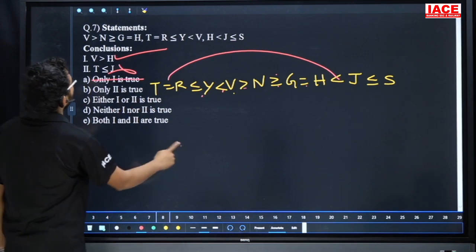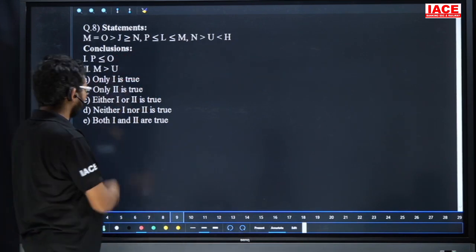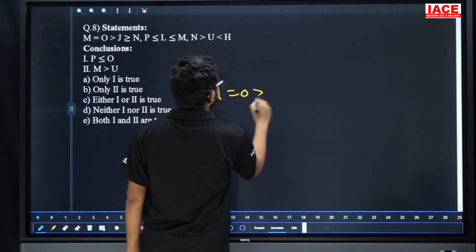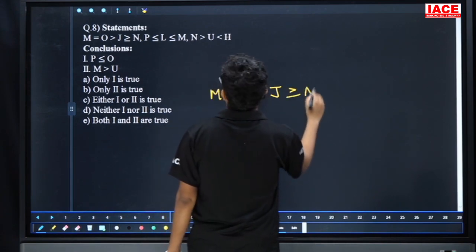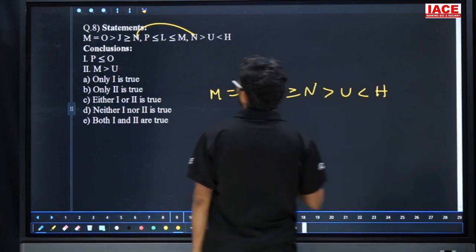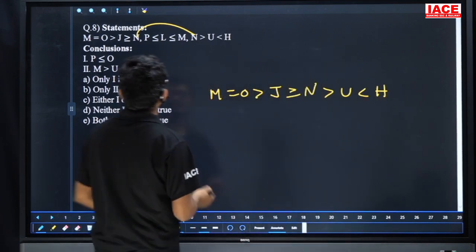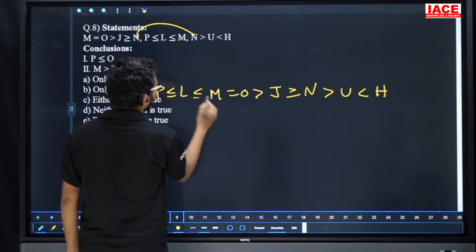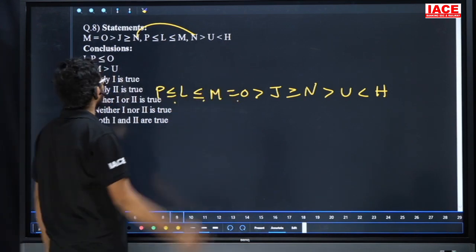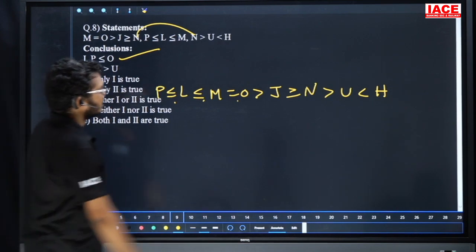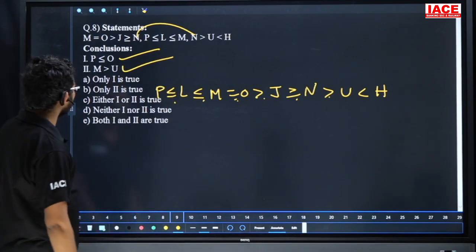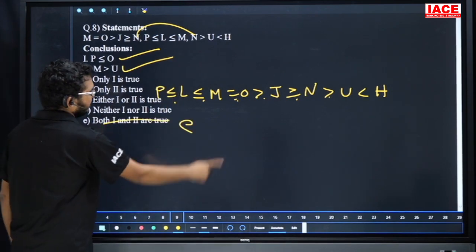Question number eight: given — M = O > J ≥ N, N > U < H, P ≤ L ≤ M. So P ≤ L ≤ M = O — conclusion one P ≤ O, true. Second: M and U — M = O > J ≥ N > U, result M > U, true. Both conclusions are true. Question number eight answer is option E.